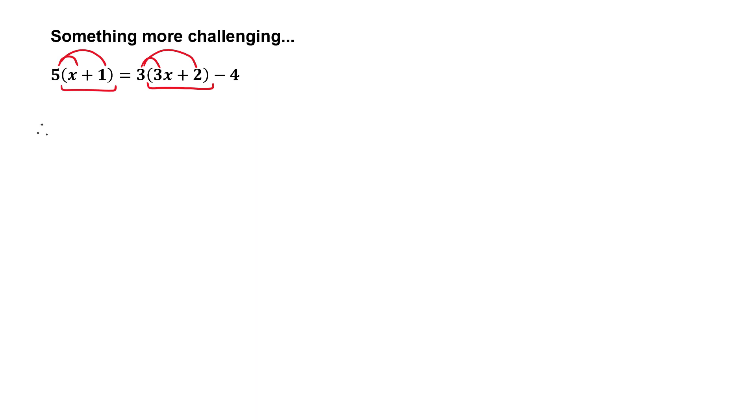Watch my notation. I put the therefore sign. So, it's going to become 5x plus 5 is equal to 3 times 3 which is 9x and 3 times 2 is 6. Make sure that when you've got questions like this, you watch the sign inside the bracket, as well as the sign in front of the number outside, minus 4.